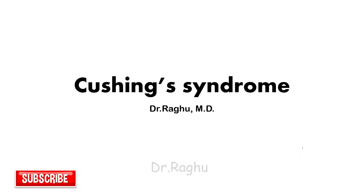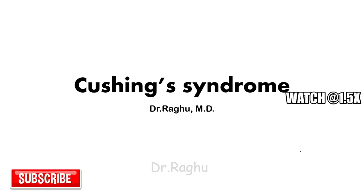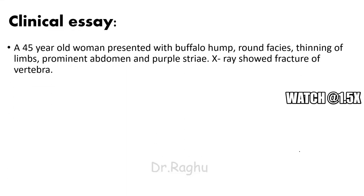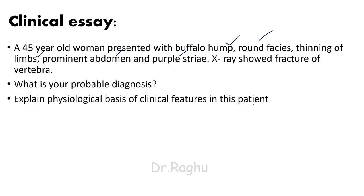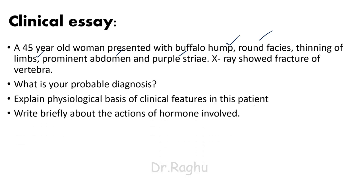In this video I am going to discuss Cushing's syndrome with the help of a clinical scenario. This clinical-based question was recently asked in a university exam. The question describes a 45-year-old woman presenting with buffalo hump, round face, thinning of limbs, prominent abdomen, purple striae, and an X-ray showing a fracture of the vertebra. The probable diagnosis is Cushing's syndrome.